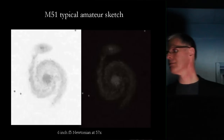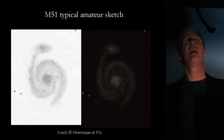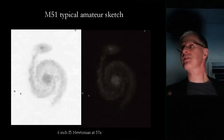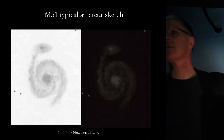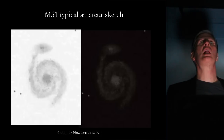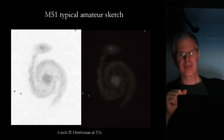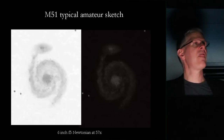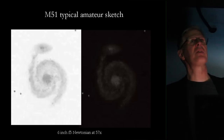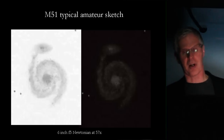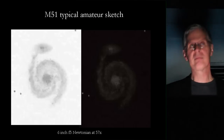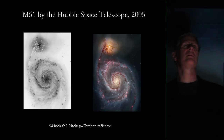They weren't crazy — they were just looking at it differently than we do. This is a typical sketch amateurs make today of M51, with a six-inch f/5 Newtonian at only 57 power. It shows the two main spiral arms and one arm sweeping all the way back to the companion galaxy. None of the 19th century astronomers saw that much photographic-style detail as this typical amateur saw with a six-inch telescope — and that is a direct result of astrophotography influencing expectations and desires.